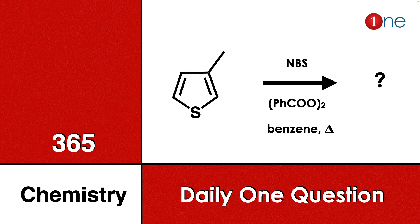Welcome to One Chemistry — this is the 365 Chemistry Series, one daily question for you. Here, type 1 is given: in the third position you have a methyl group, reacting with NBS (N-bromosuccinimide) and peroxide, with benzene as the solvent. You are heating it up — you have to find the final product.